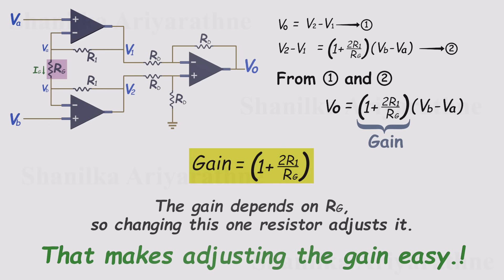This simplifies to 1 plus 2R1 over RG. Because the gain depends on only one resistor RG, we could even make it a variable resistor so adjusting the gain becomes as easy as turning a knob. And with that, we've solved our final drawback.